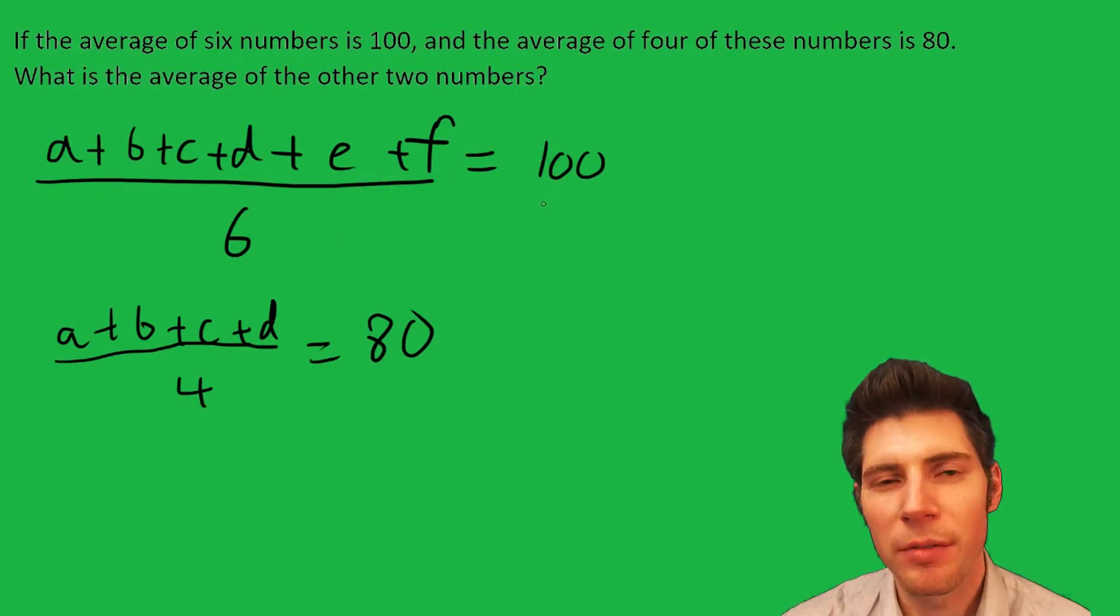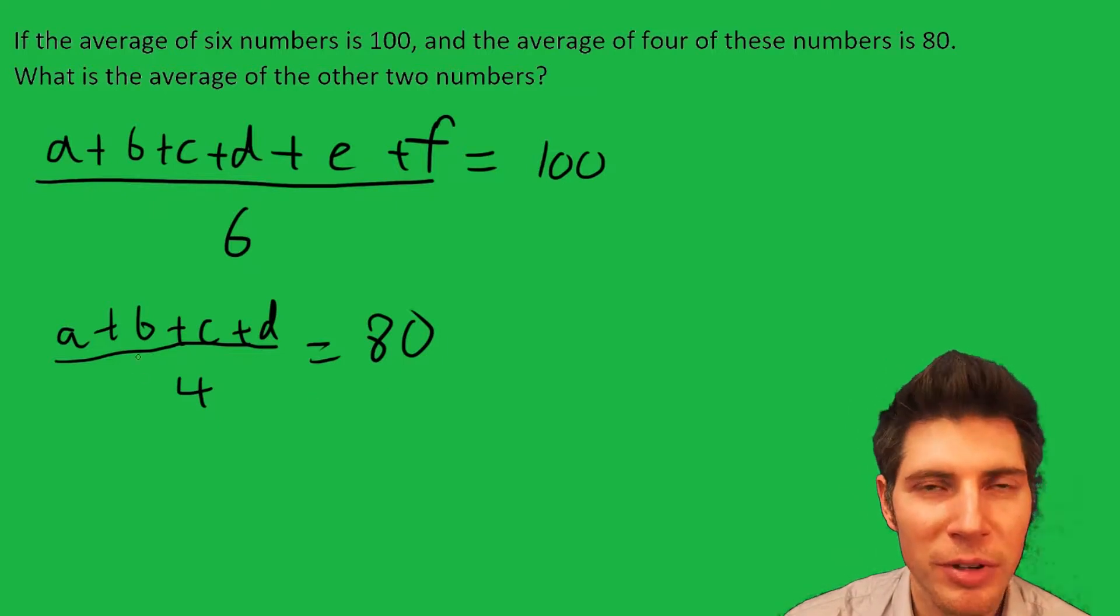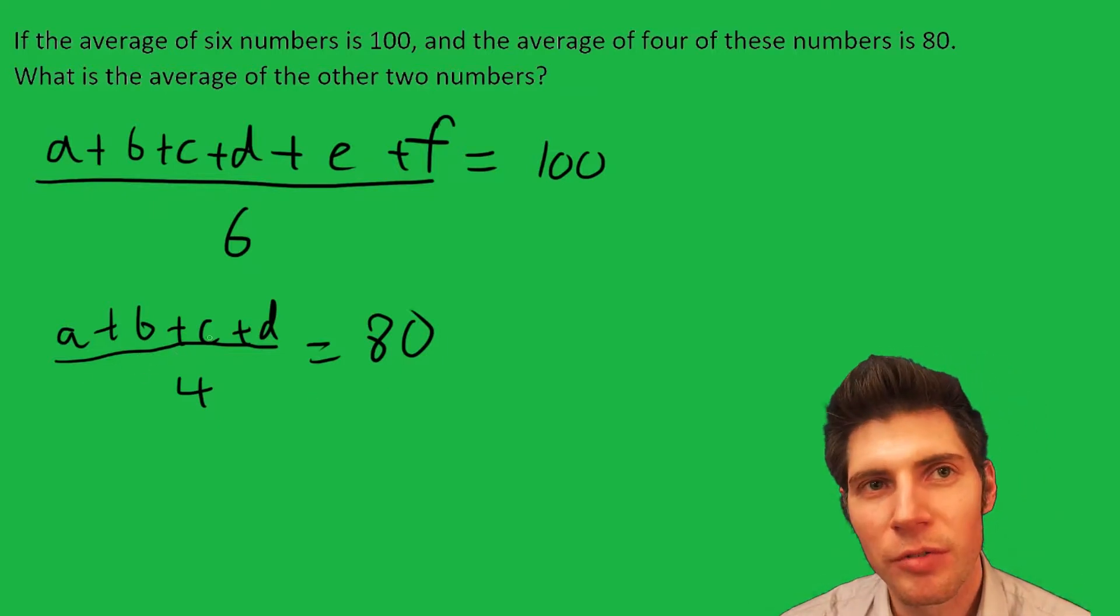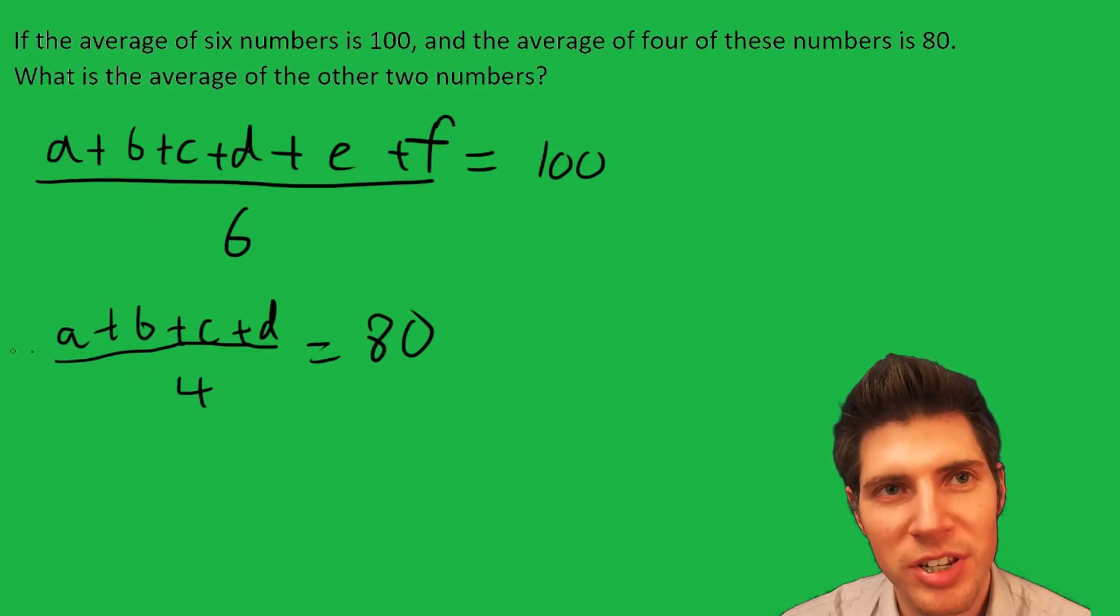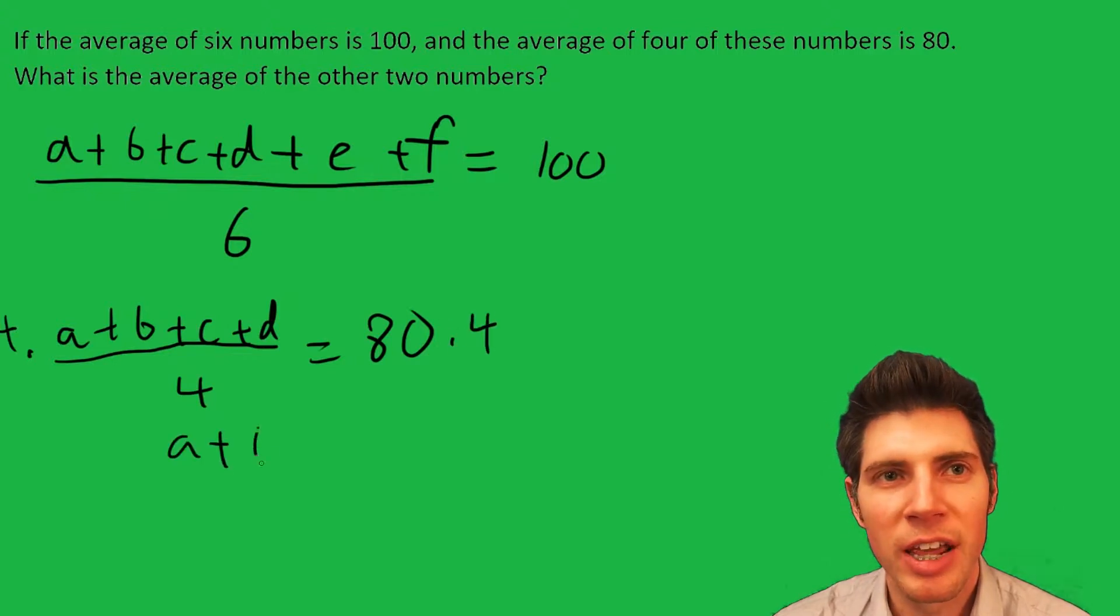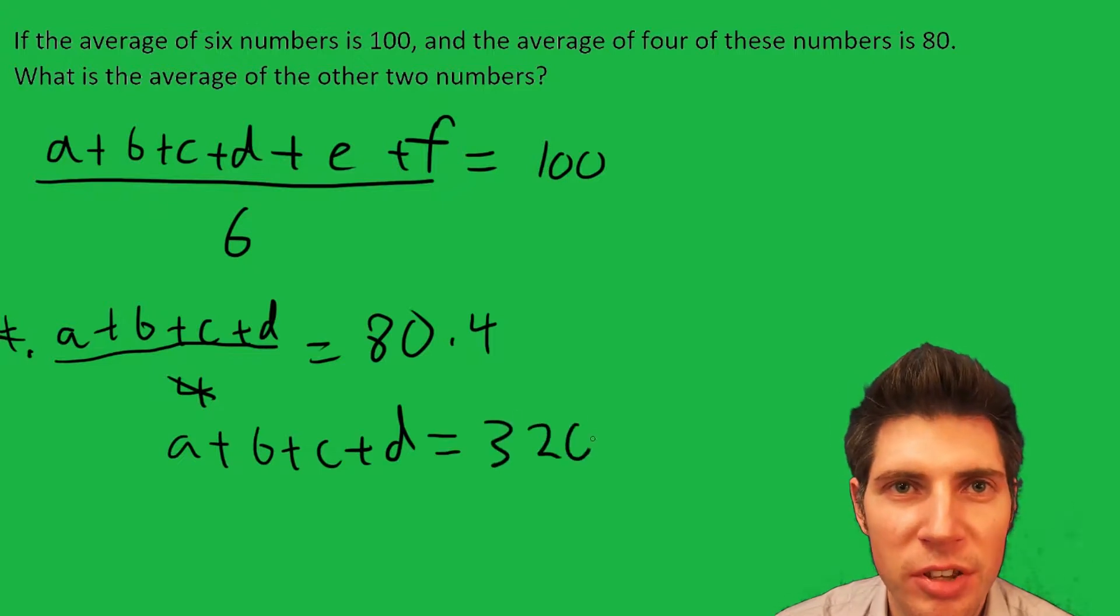So what did I do? Six numbers, the average, so I divided by six to get 100. Four numbers, the average, so I divide by four to get 80. Now I'm going to solve for a+b+c+d. I'm going to multiply both sides by four, so I get a+b+c+d - these fours cancel - equals 80 times 4, which is 320.